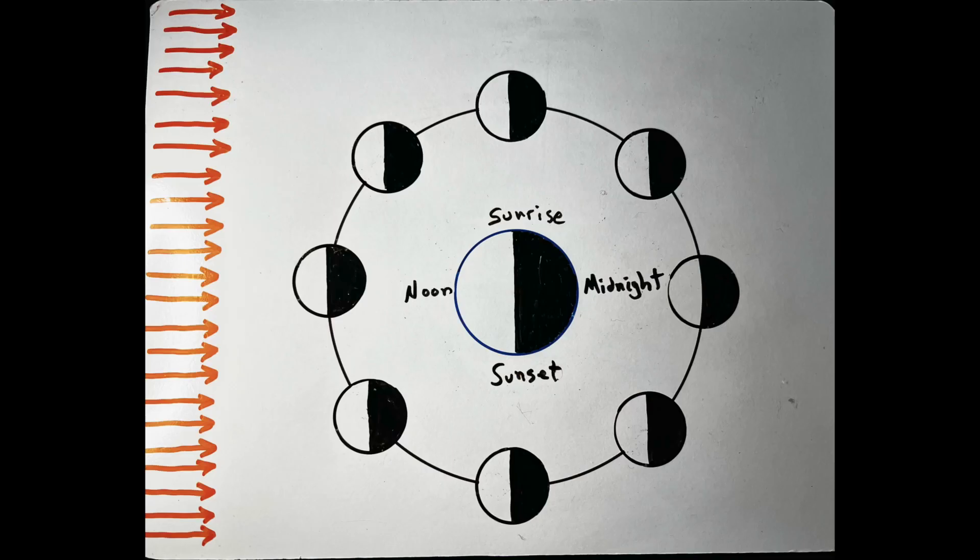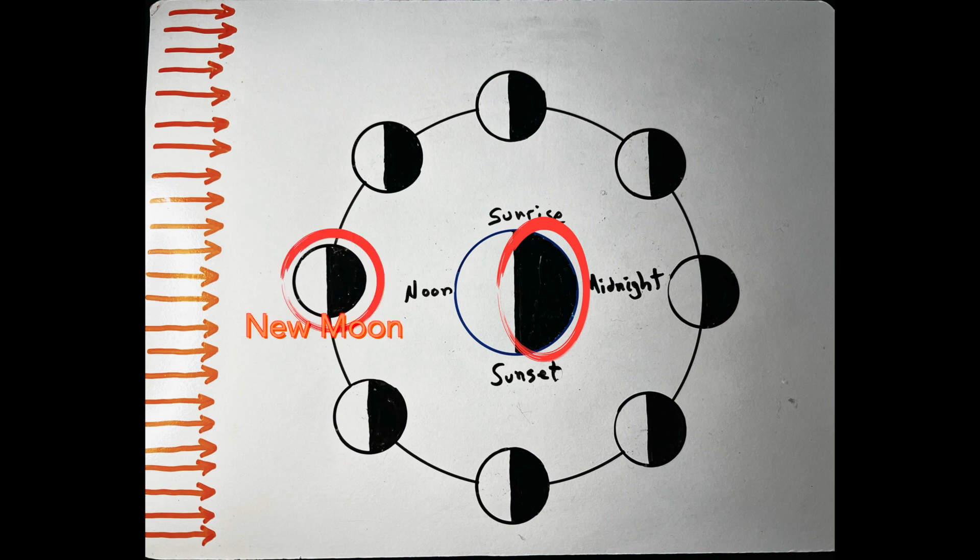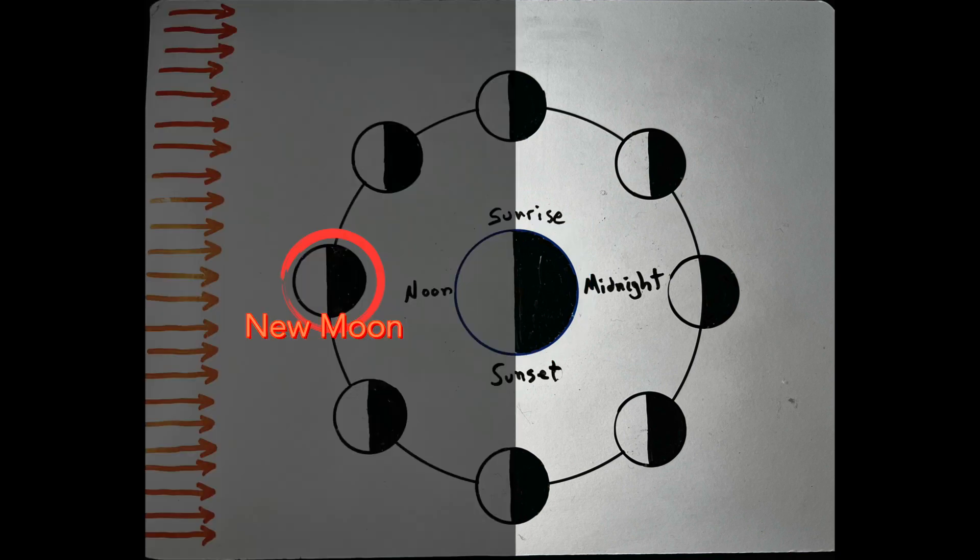So can a person on the night side of Earth here see a new moon phase here? Nope. They're facing the wrong direction. I've shaded in everything you cannot see from the night side of Earth. So what time will they first be able to see the moon? That's right, sunrise.